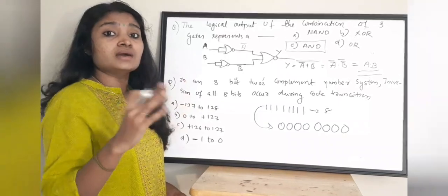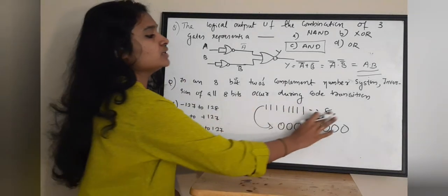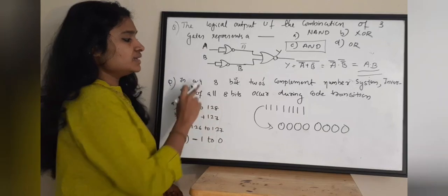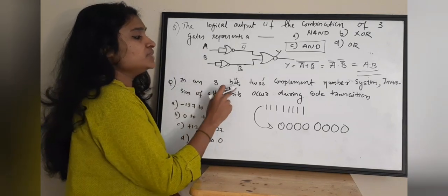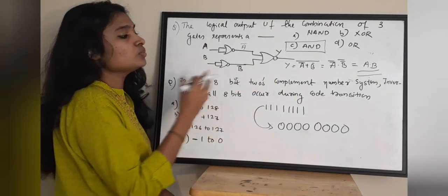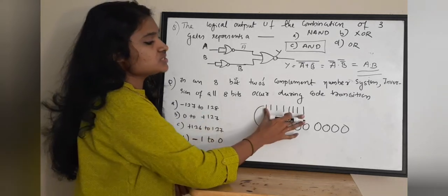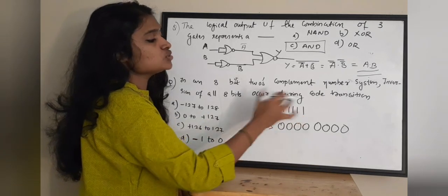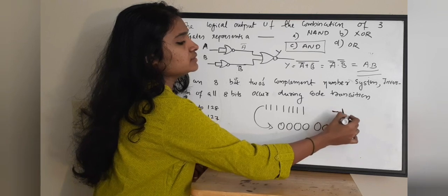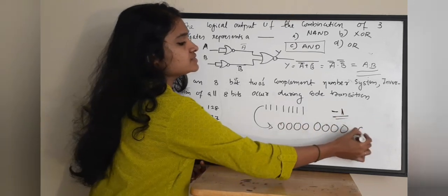In the 8-bit 2's complement number system, the bit pattern 11111111 represents minus 1, and 00000000 represents 0. So the transition that causes all 8 bits to invert is the transition from minus 1 to 0.